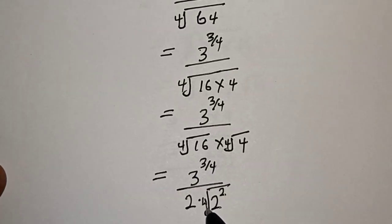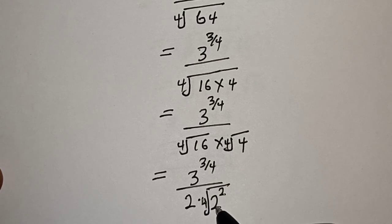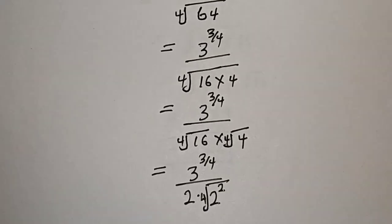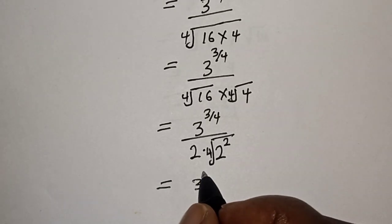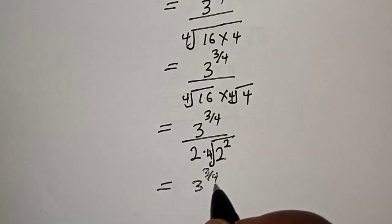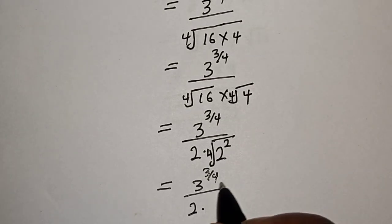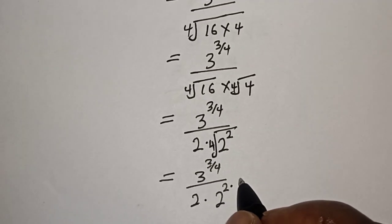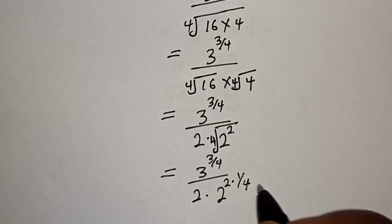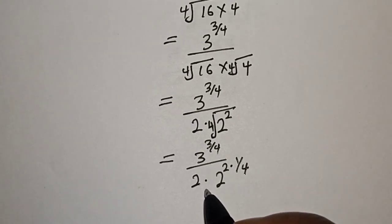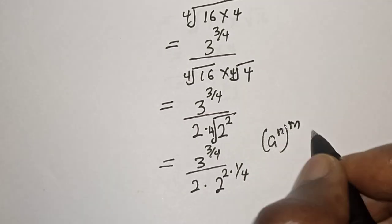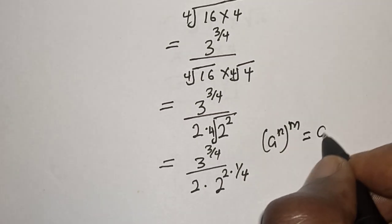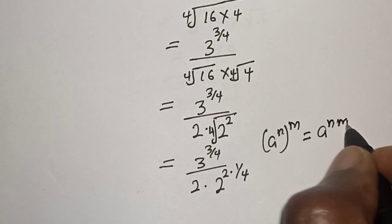Then this is equal to 3 raised to power 3 over 4, over 2 multiplied by the 4th root of 2 squared. Take note of the rule that a raised to power n, all to the power of m, is equal to a raised to power n times m.